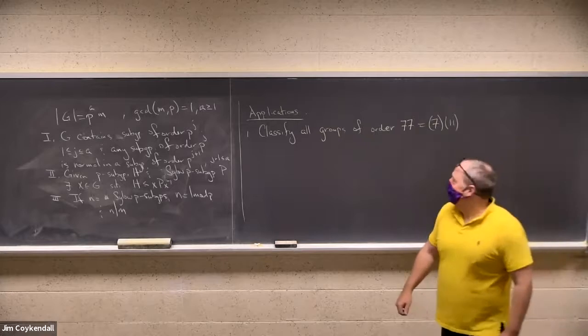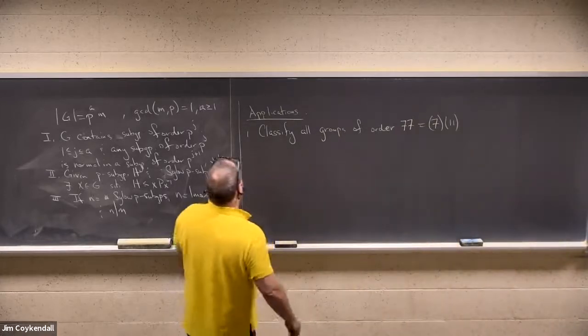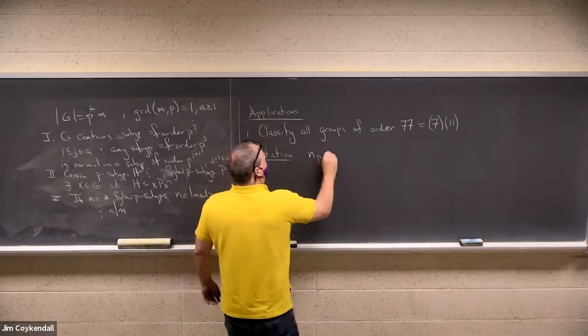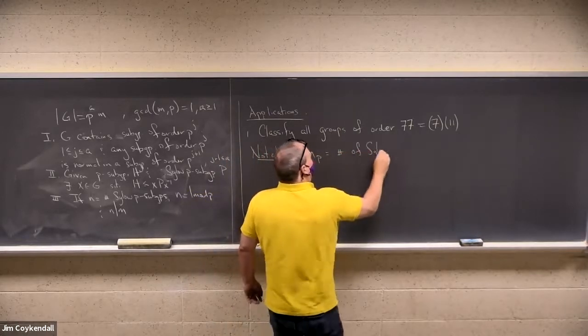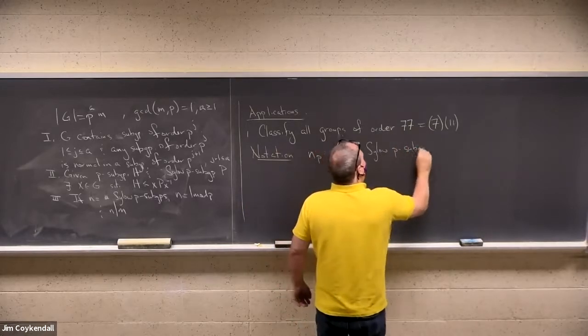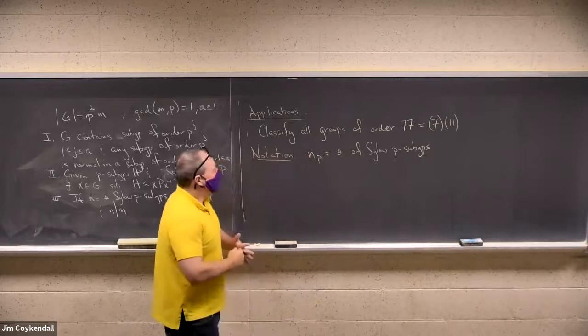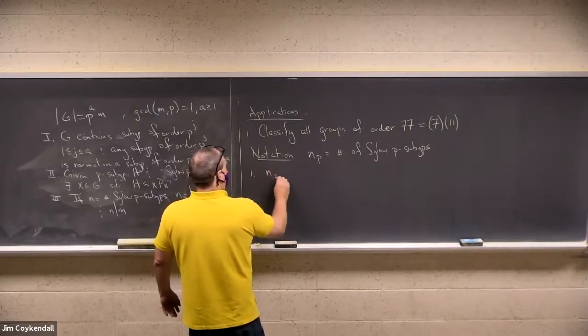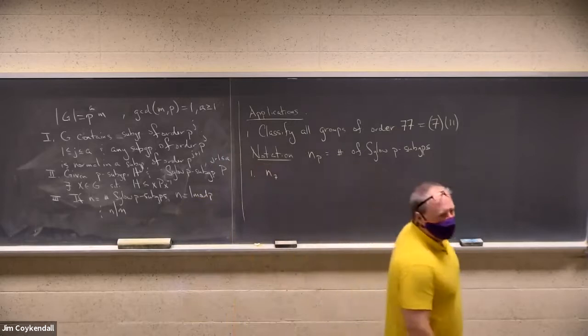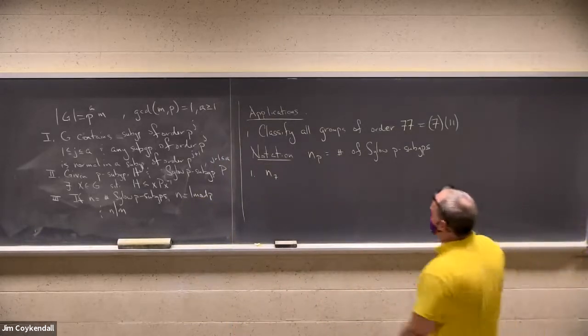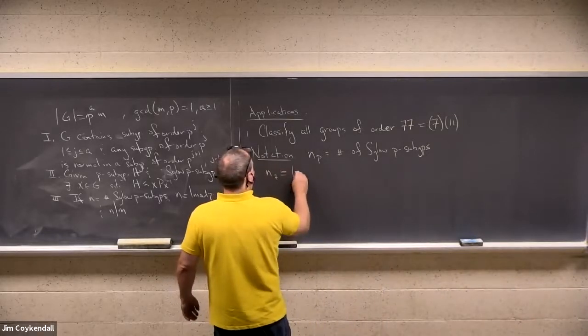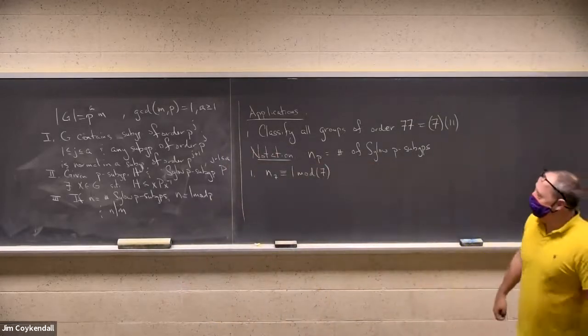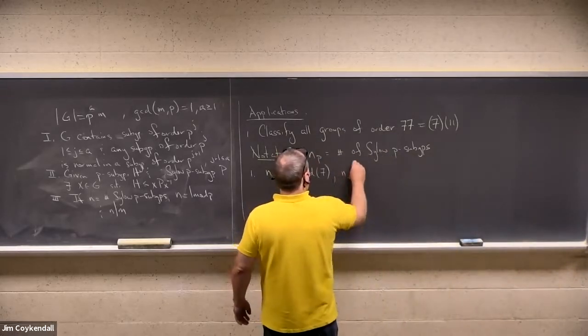So let's examine the Sylow 7 versus Sylow 11. Here's the notation I'll use: N sub P denotes the number of Sylow P subgroups. Let's check this out. N sub 7, how many Sylow 7 subgroups are there? I've got two clues. Number one, N sub 7 is equivalent to 1 mod 7. That's what the third part says. And also the third part says N sub 7 must divide 11.